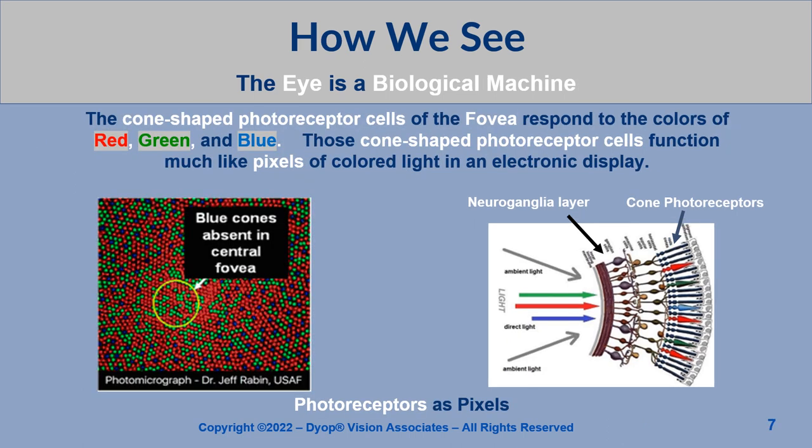The cone-shaped photoreceptor cells of the fovea respond to the colors of red, green, and blue. Those cone-shaped photoreceptor cells function much like pixels of colored light in an electronic display.